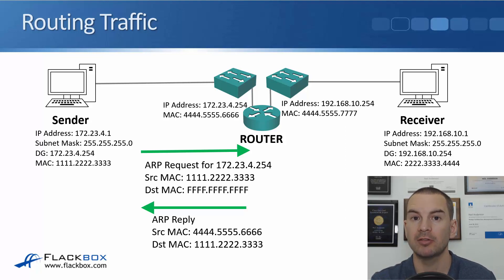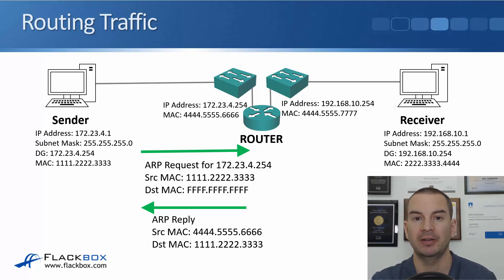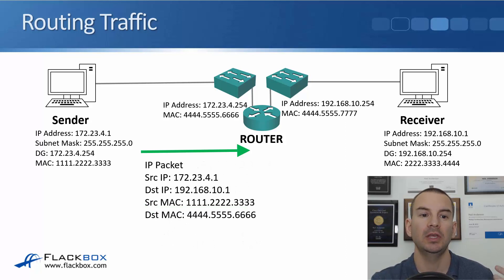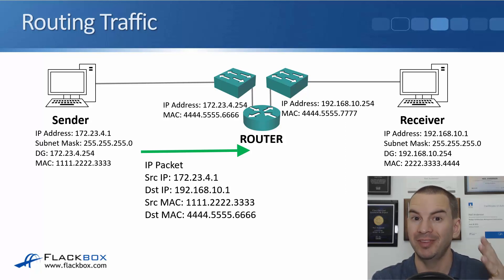The router sees it's an ARP request for itself, so it sends an ARP reply. That reply comes from the router's source MAC 4.5.6 (the MAC for IP 172.23.4.254), and the destination MAC is 1.2.3. The router knows to send it there because that source MAC was in the original ARP request. The sender has been holding the IP packet for the final destination while it waited for the ARP reply, and now it knows the destination MAC and can send that IP packet.